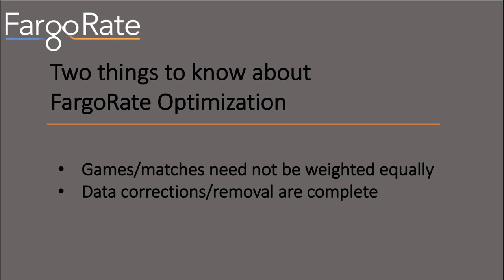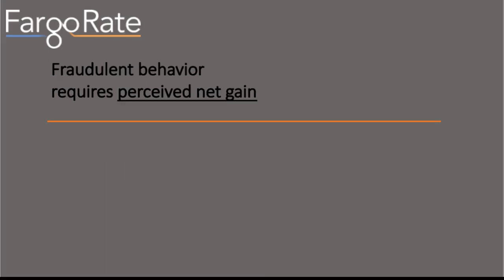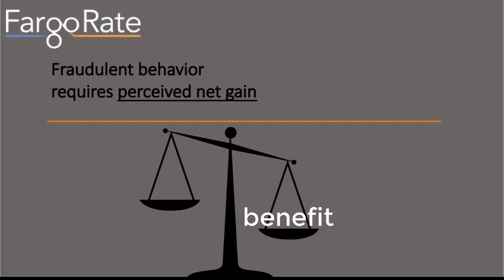It's not like when the judge says the jury will disregard that outburst and the jury actually can't unhear it. If we want to create a system where people behave better, we have to recognize that people behave badly because they perceive they're better off — they perceive a benefit that outweighs the cost. Our opportunity involves decreasing the perceived benefit, increasing the perceived cost, or both.